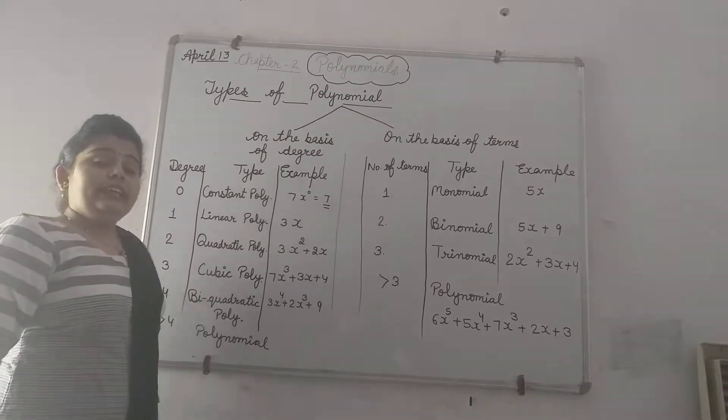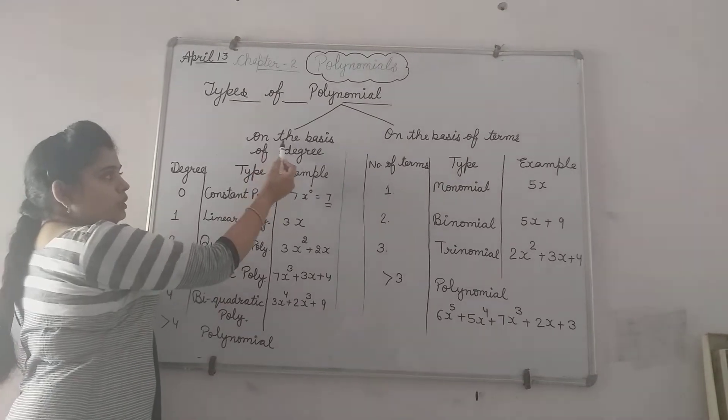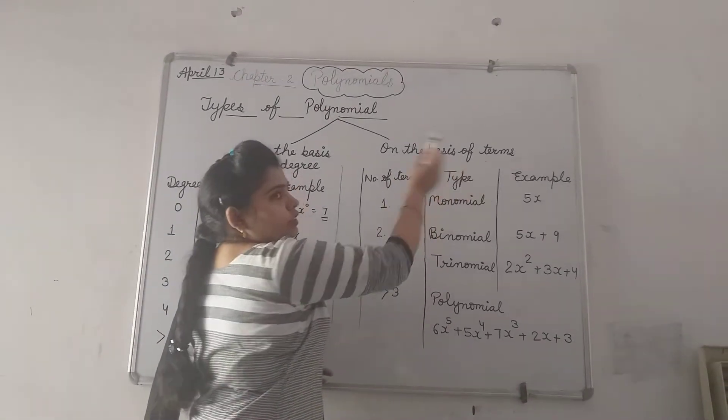Polynomial. We can categorize polynomial on two bases. First is on the basis of degree and second is on the basis of terms.